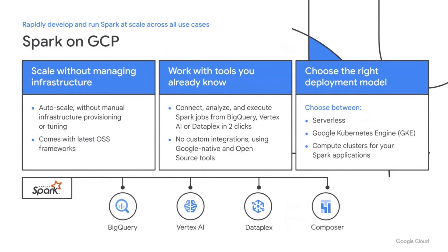There are three key pillars to our Spark support. The foundation is an auto-scaling serverless Spark offering for all your workloads. We are bringing the same simplicity you're used to with our native cloud services to Spark, taking away the manual toil and complexity typically associated with Spark deployments. The second pillar is having Spark be pervasive with our market-leading services like BigQuery, Vertex AI, Composer, and Dataplex. Now data engineers, data scientists, and developers can all seamlessly use Spark in their tools of choice across all of their data.